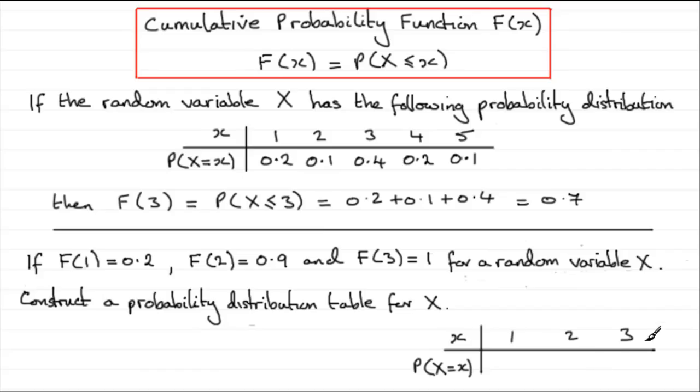Well, if we wanted to work out, for instance, the probability of x equaling 3, then to work out the probability that x equals 3, all I need to do is work out what the probability of x being less than or equal to 3 is minus the probability that x is less than or equal to 2. In other words, the sum of these three probabilities minus the sum of these two probabilities.